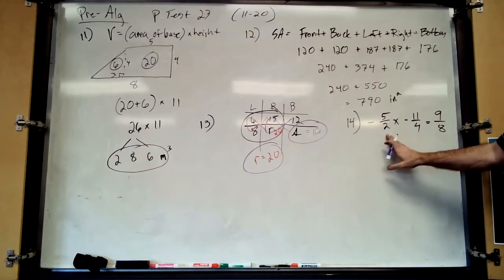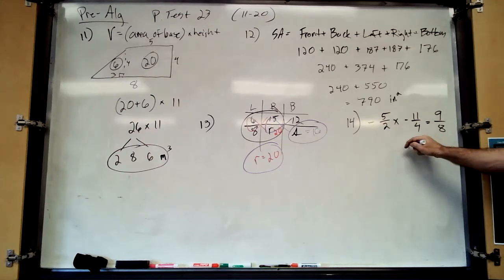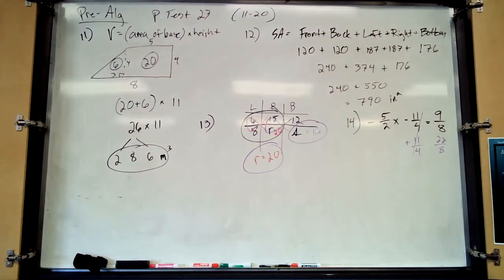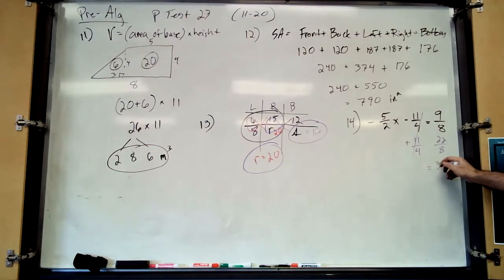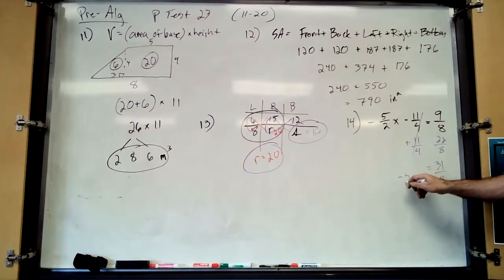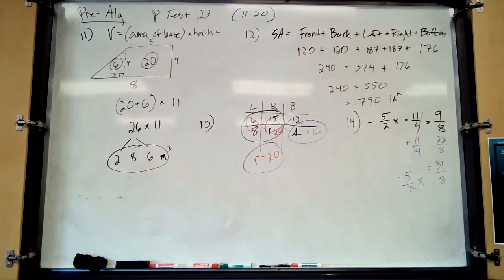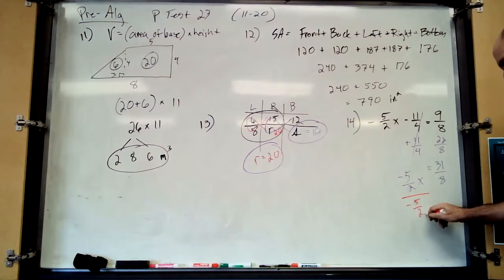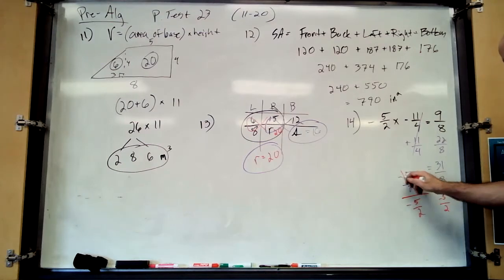Get rid of the constant term first — it's the furthest from x. To get rid of minus eleven-fourths, add eleven-fourths to both sides. Eleven-fourths equals twenty-two eighths, so adding gives you thirty-one eighths on the right. Now you still have negative five-halves x. To get rid of multiplication, divide both sides by negative five-halves.